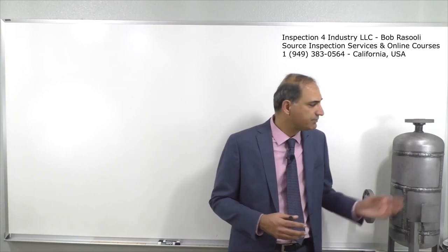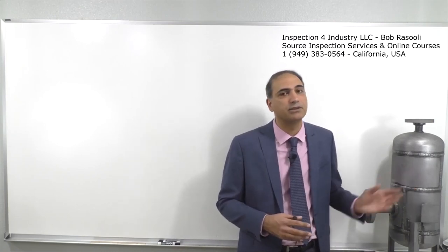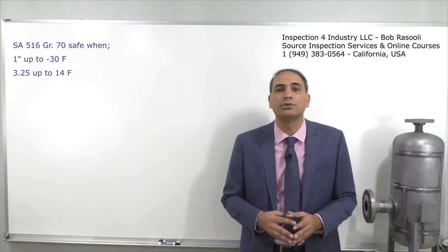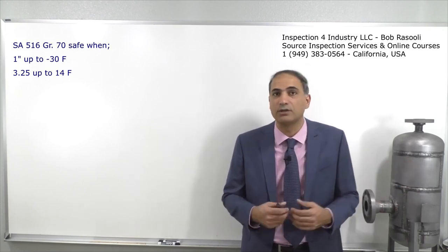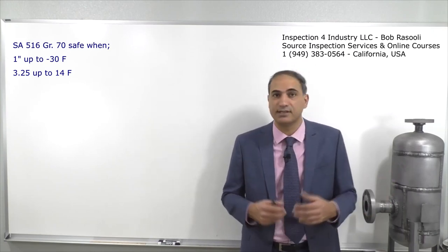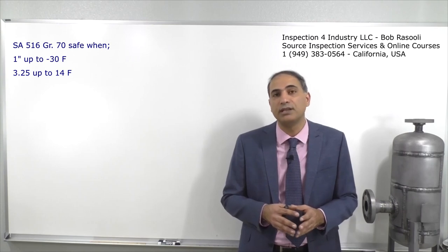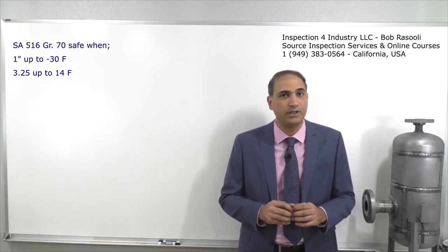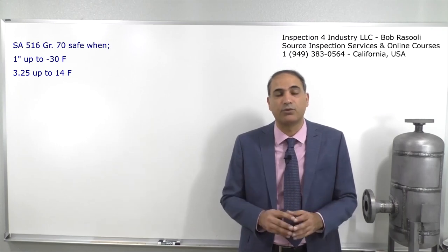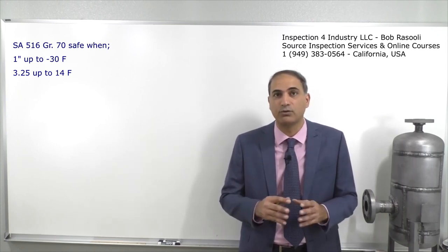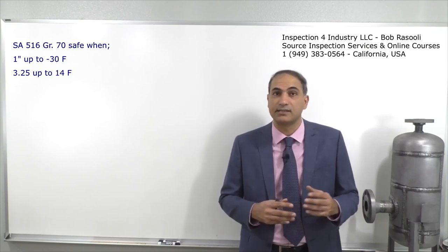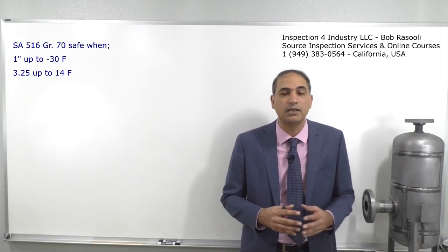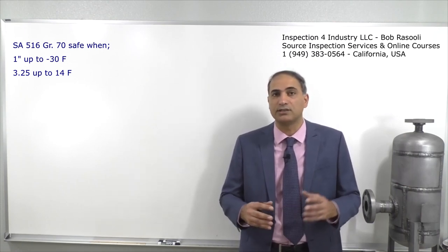Thickness plays an important role. For SA516 grade 70, you can use this material down to minus 30 degrees Fahrenheit when the thickness is 1 inch. But if you go to 3.25 inches — our nominal thickness — you can only use this material safely down to 14 degrees Fahrenheit without impact testing. There is no susceptibility to brittle fracture at 14°F with a 3.25-inch thickness, but with 1-inch thickness you can go down to minus 30°F.